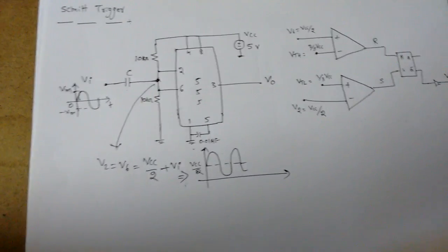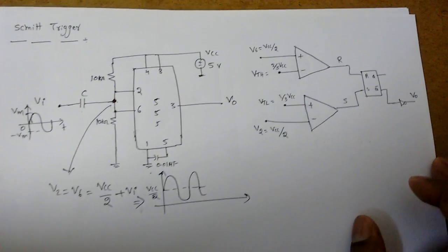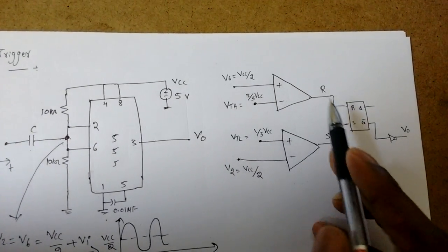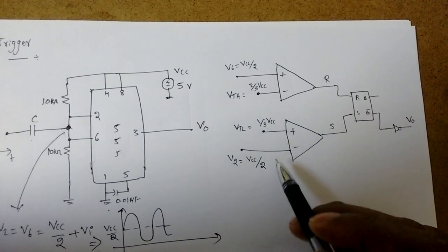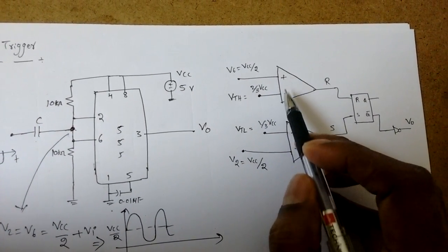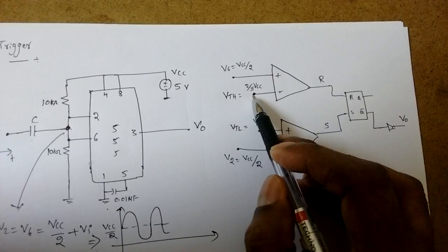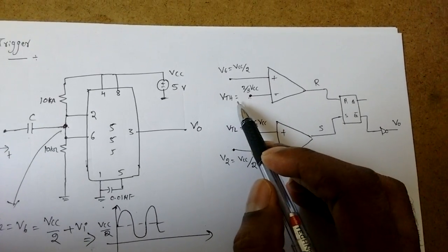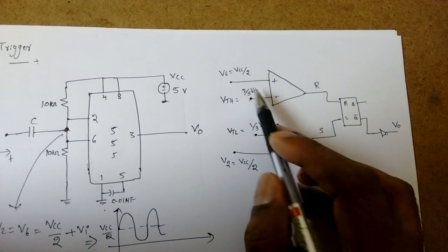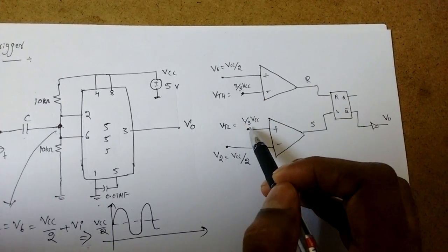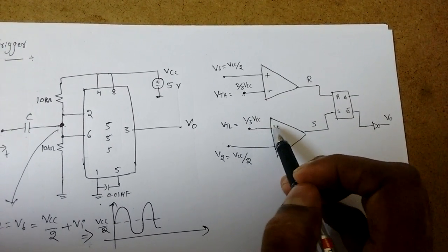Now how it will generate a square waveform using this. This is the normal DC conditions - that is plus minus is connected to 2 by 3 VCC, that is VTH, that we have seen in previous lectures. Due to three equal resistors, similarly VTL is equal to 1 by 3 VCC which is connected to plus.